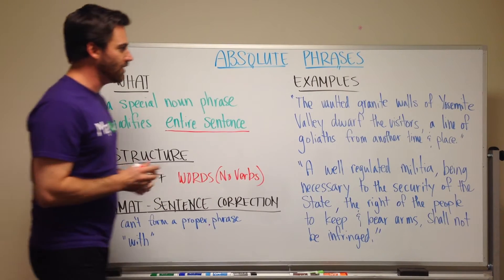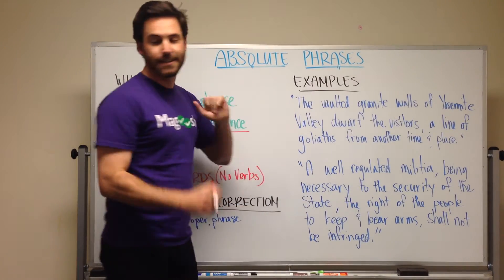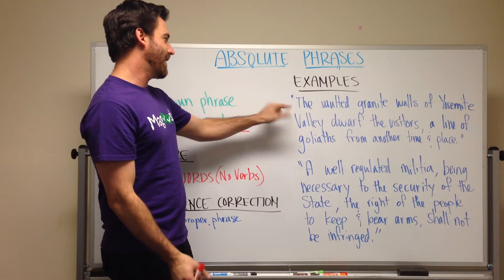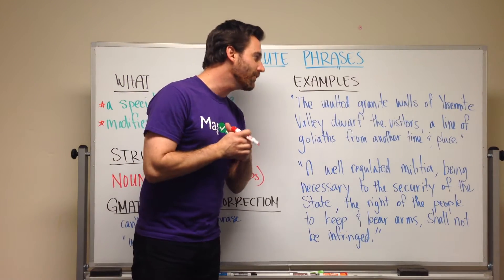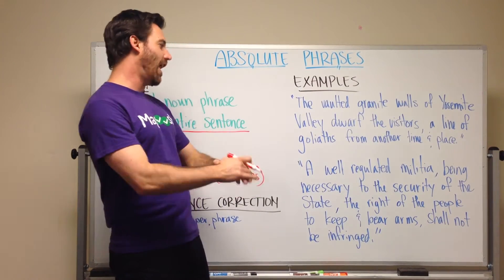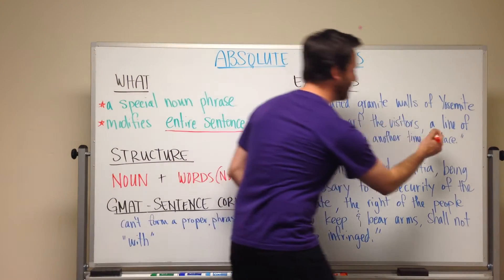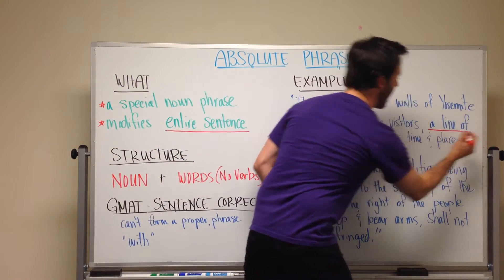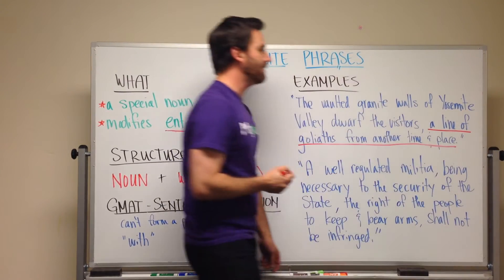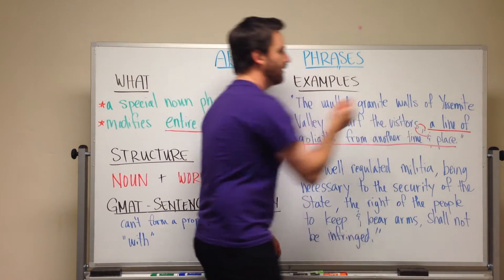I have some examples over here. The first example is about Yosemite Valley, a very nice place. It says: 'The vaulted granite walls of Yosemite Valley dwarf the visitors, a line of Goliaths from another time and place.' And so our absolute phrase is here at the end — it begins after the comma.